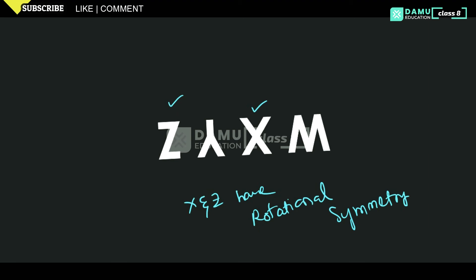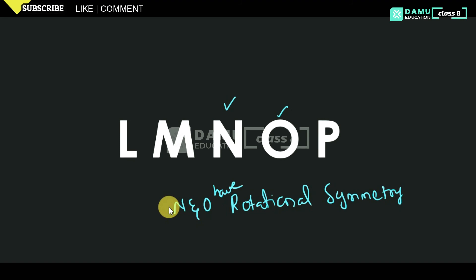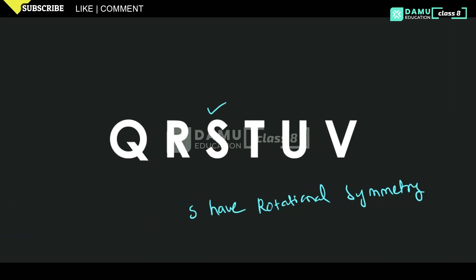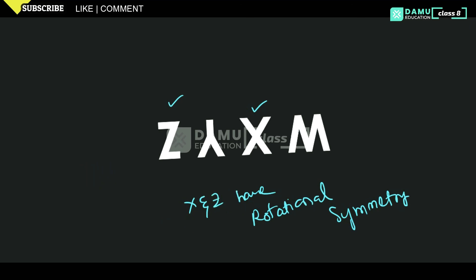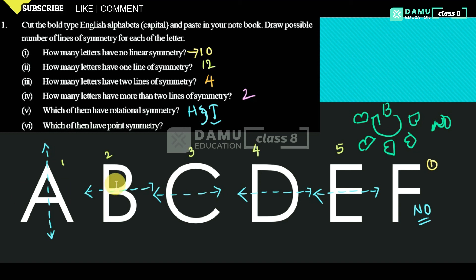So which letters will have rotational symmetry? That is: H, I, N, O, S, X, and Z — these letters have rotational symmetry.